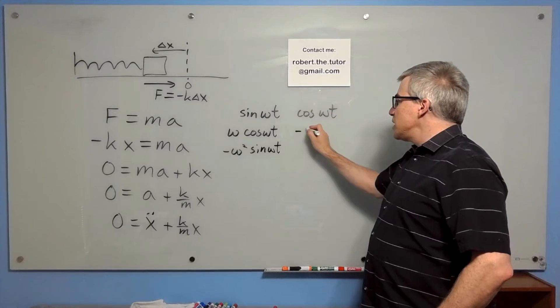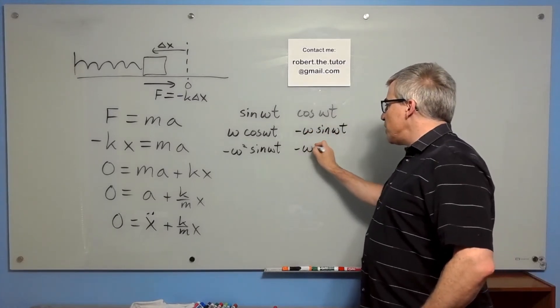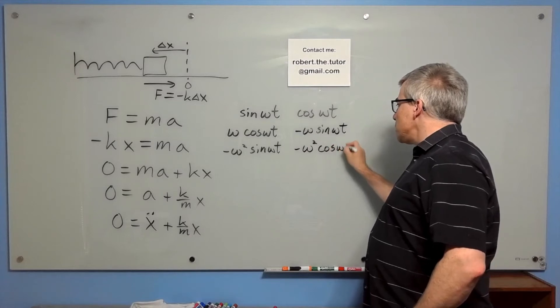Meanwhile, derivative of cosine is negative omega sine omega t. And the double derivative is minus omega squared cosine omega t.